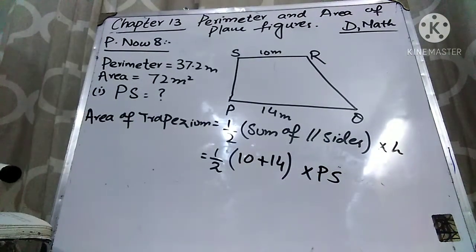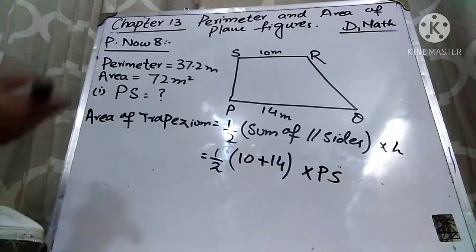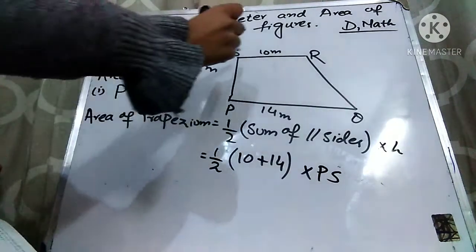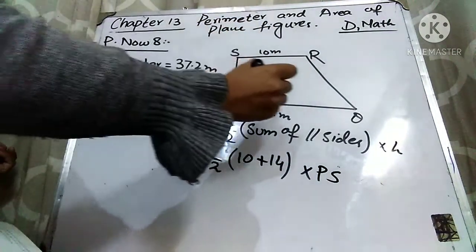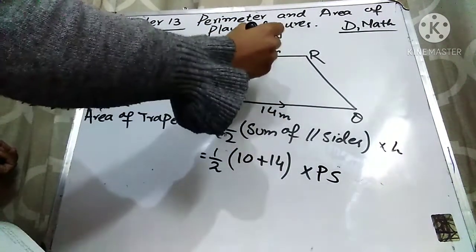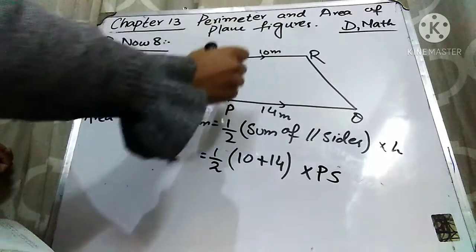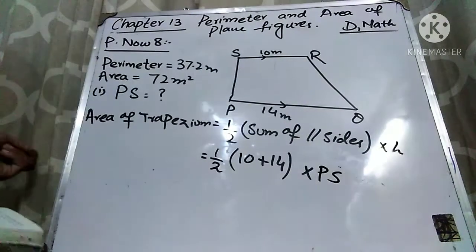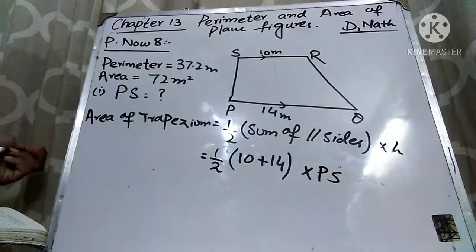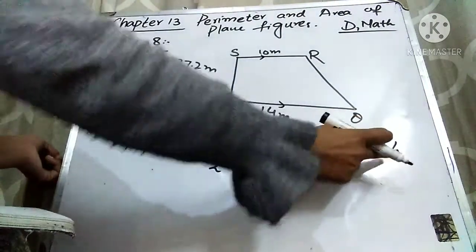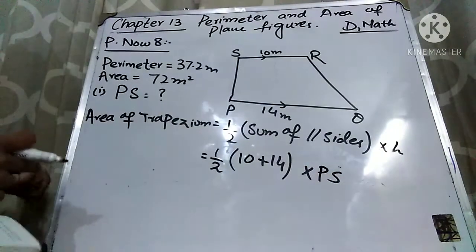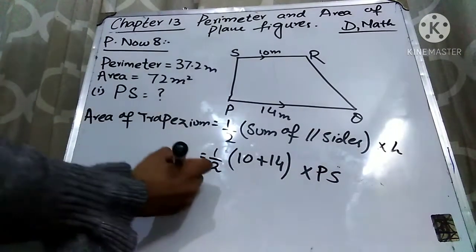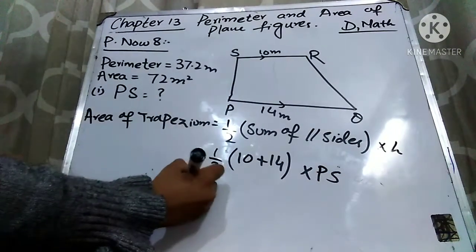The height is the distance between two parallel lines. These two are the parallel lines and this is the distance, so this is the height. Now we have to find out the height, and we will write down PS as it is. Now we will solve it.